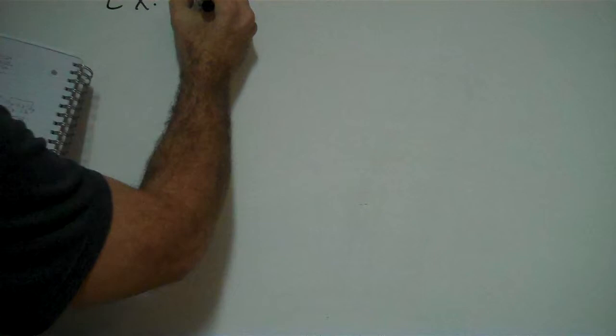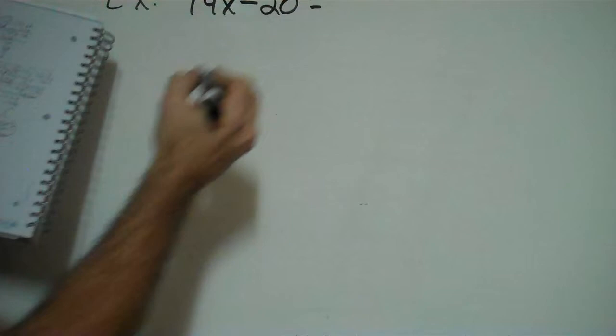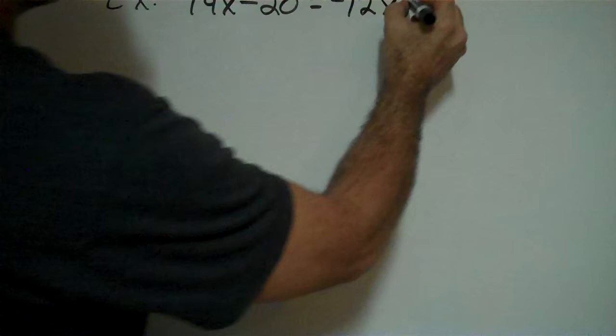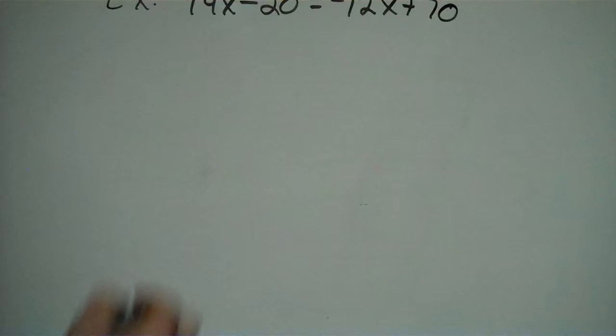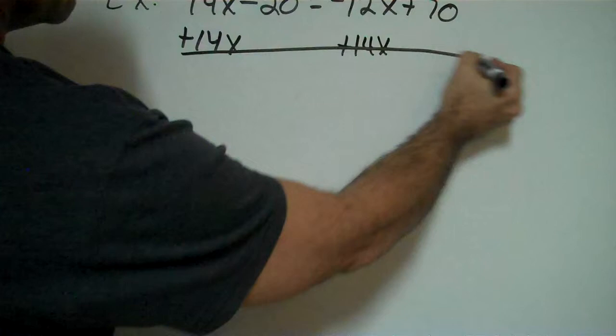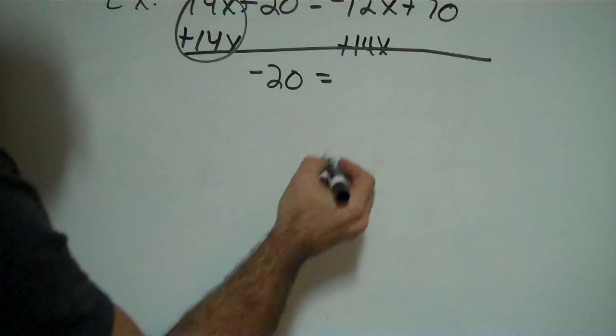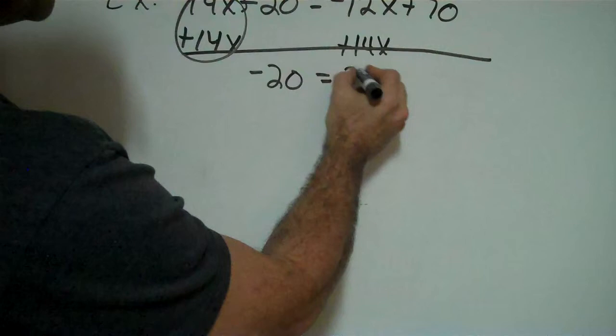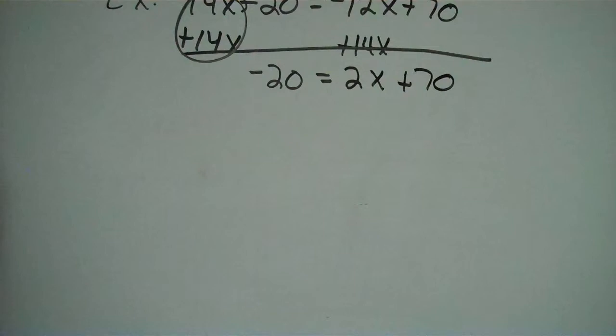Alright, next example. Negative 14x minus 20 equals negative 12x plus 70. So I'm going to move the smaller x. Remember, negative 14 is smaller than negative 12. So I'll move it by adding a 14x to both sides. That zeros out. All that's left is that negative 20. That's equal to my negative 12 and my positive 14. Well, 14 and negative 12 give me a 2x, and then I got my plus 70.